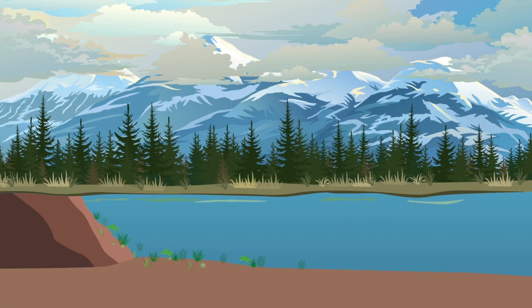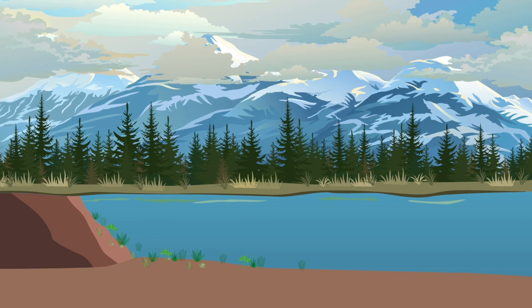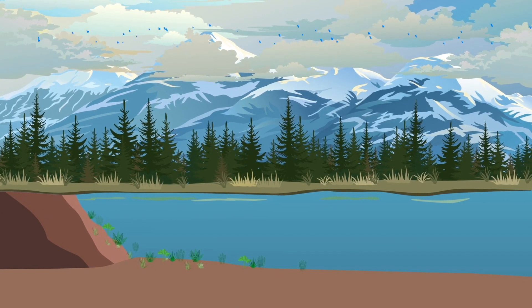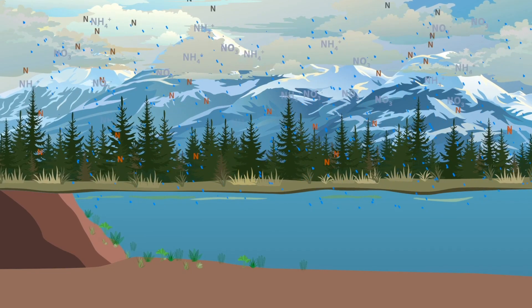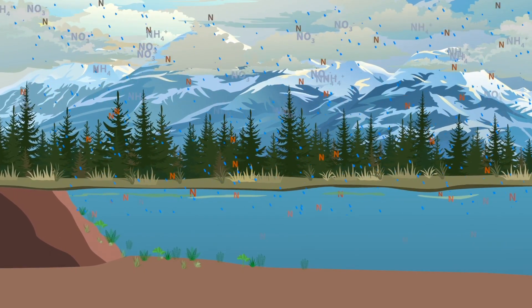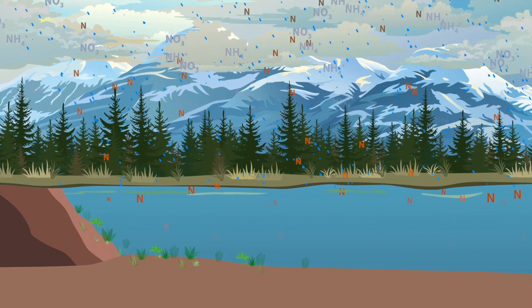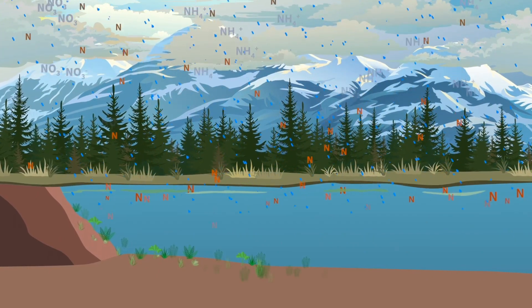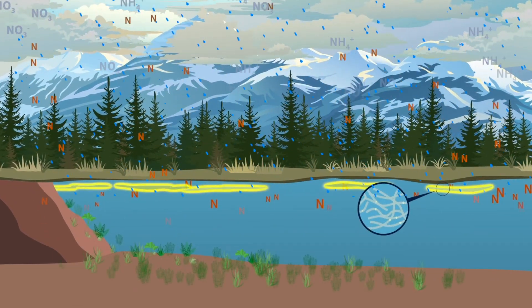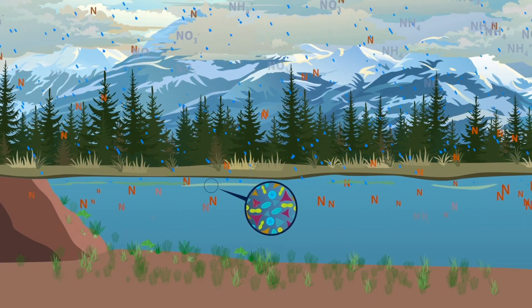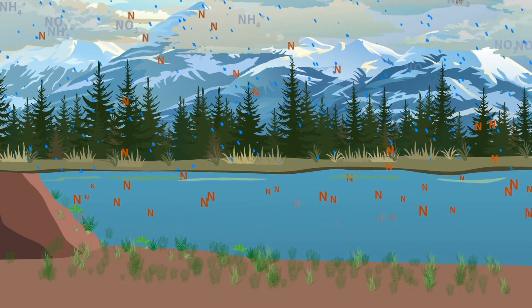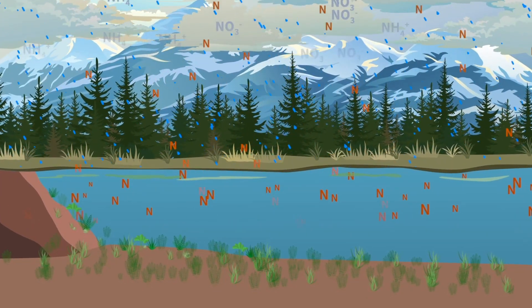High elevation lakes in the west are particularly sensitive to nitrogen deposition. Excess nitrogen, along with naturally occurring phosphorus, will fertilize the water. As nitrogen increases, cyanobacteria, green algae including diatoms, and aquatic plants will begin to grow faster if conditions are favorable.